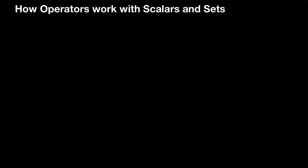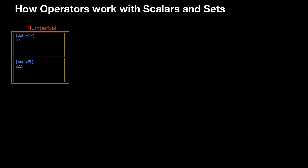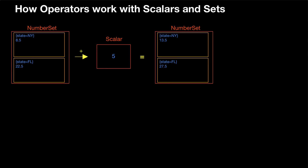So looking at how operators work with scalars and sets: we have a number set here with our set, items in the set, each item identified by a tag set, and a single value — that's what makes it a number set. So we use the addition operator and the scalar, our constant number five, and what that gives us is a new number set that still has the same number of items in the set, but five, the scalar, has been added to each value in the set.